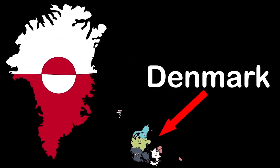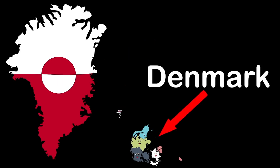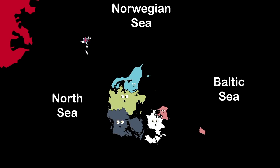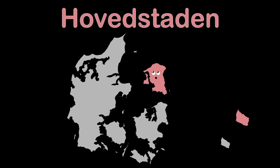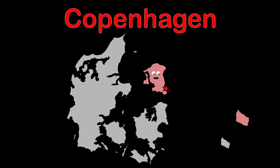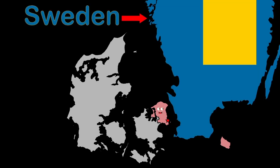We make up Denmark — we are the regions within, with two autonomous constituent countries. We are Denmark, between the Baltic, Norwegian, and North Sea, also touching the Arctic and Atlantic Ocean. I am the region of Hovedstaden — the largest city in my region is Copenhagen, located in the northeast of Denmark. The Midtjylland region is in Denmark's mid area; largest city is Aarhus. I touch the North Sea to my west.